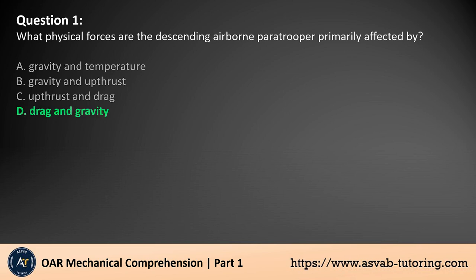The answer is D. A descending airborne paratrooper is primarily affected by two forces: gravity, which pulls the paratrooper downward toward the earth, and drag, which is the air resistance opposing this downward motion. The parachute increases drag significantly, slowing the descent and allowing for a safe landing. Upthrust and temperature do not play significant roles in this scenario.